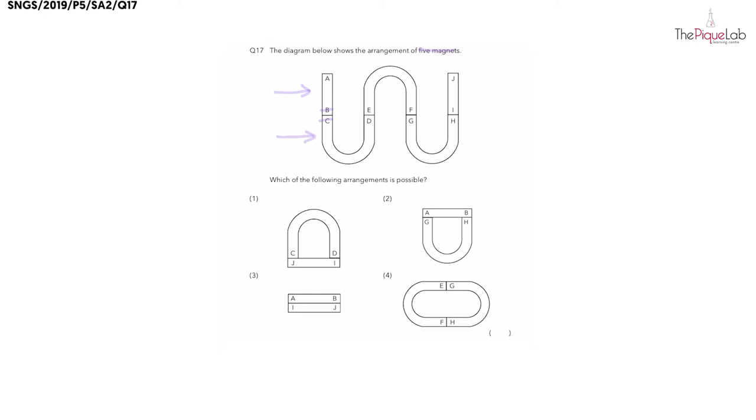Since the question didn't label any poles, I'm going to label these north and south. Now, is it possible for B to be south instead and C to be the north pole? Yes, it is possible as long as the poles are unlike, but let's erase away one option.